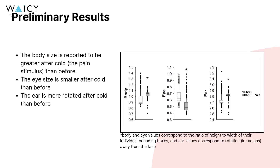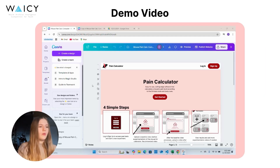The white boxes represent the mouse before, and the grey boxes represent the mouse after. Hunched body posture, or larger body height relative to width, eye squinting, and greater ear rotation was detected when the mouse was in pain, which perfectly aligns with the grimace scale and past literature.